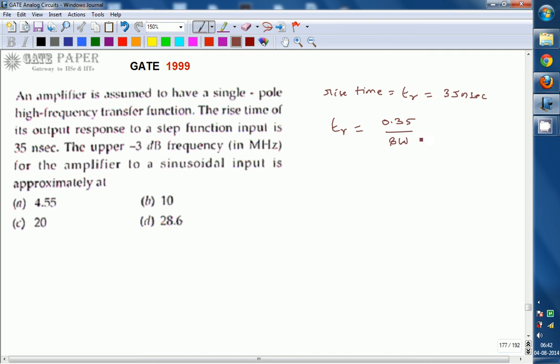We know bandwidth equals upper cutoff frequency minus lower cutoff frequency. But lower cutoff frequency is very small, upper cutoff frequency is very high. So it can be assumed as upper cutoff frequency itself.